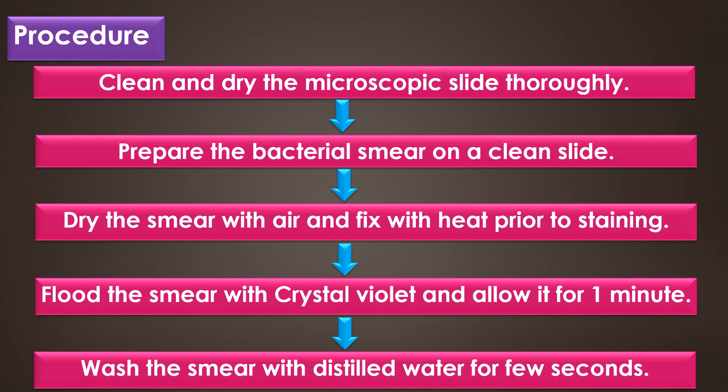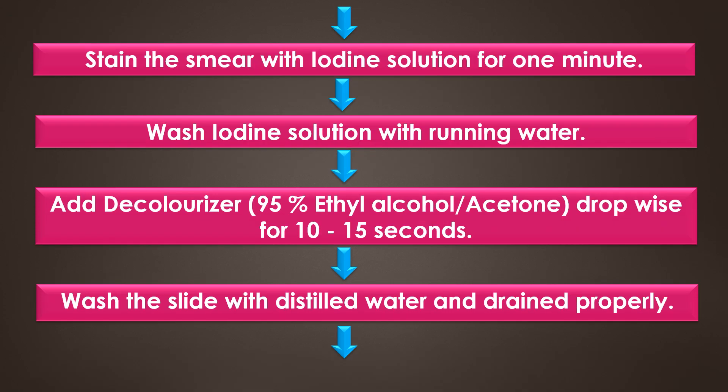First, clean and dry the microscopic slide thoroughly, and then prepare the bacterial smear on a clean slide. Dry the smear with air and fix with heat prior to staining, and flood the smear with the primary stain crystal violet and allow it for 1 minute. After that, wash the smear with distilled water for a few seconds, then stain the smear with Gram's iodine solution for 1 minute, and wash the iodine solution with running water.